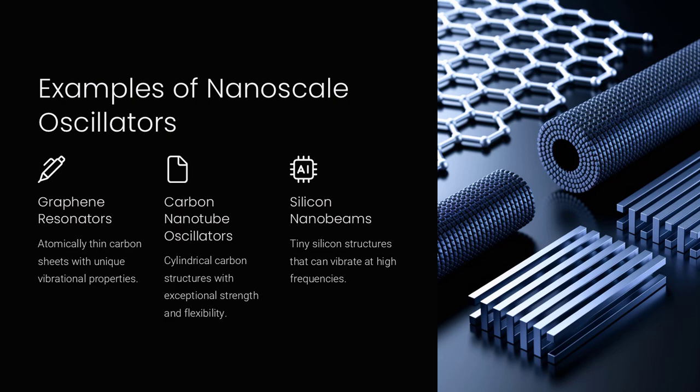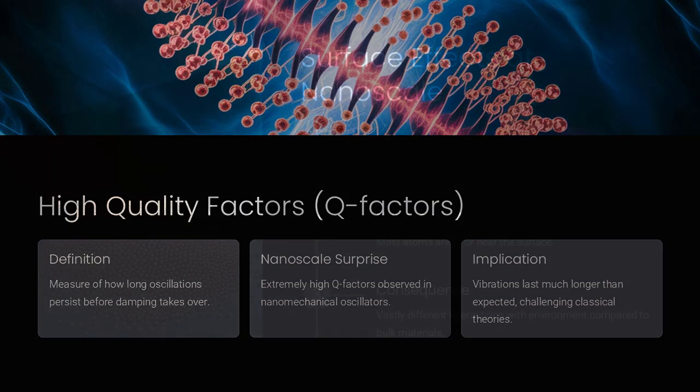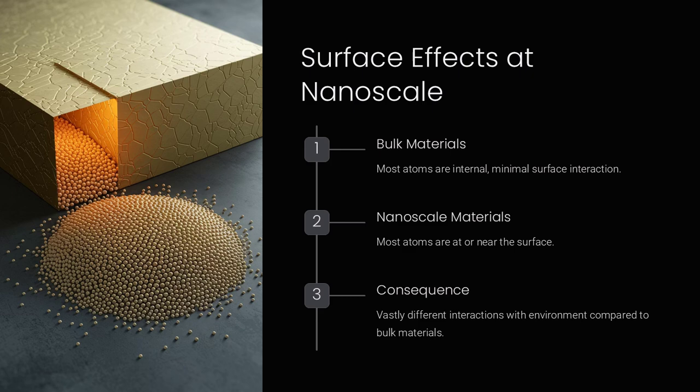Why do some nanoscale oscillators retain energy far longer than expected while others lose energy unpredictably? This paradox forces scientists to rethink how fundamental forces operate at the intersection of classical and quantum mechanics.